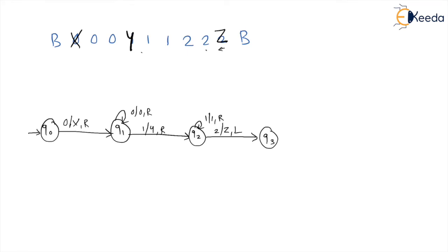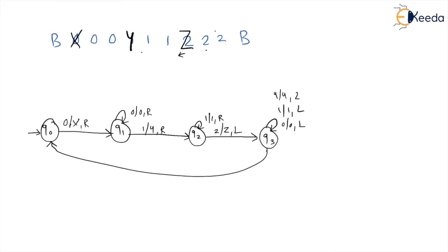In q3, for all 1s keep as 1 and move left — they are bypassed. Then for all y's, bypass them. Then for all 0s, keep as 0 and bypass. This bypassing continues until you get the first x. The moment you get the first x, keep it as x, move to the right, and go back to the initial state q0.